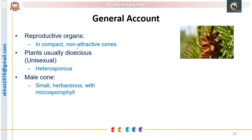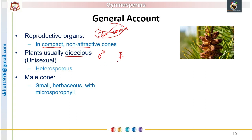The reproductive organs are produced in compact cones. These cones are non-attractive as calyx and corolla are absent. The plants are dioecious — male plants are separate from female plants, so each plant is unisexual. They produce two types of spores: the male plant produces microspores and the female plant produces megaspores. Because the spores are of two types, gymnosperms are called heterosporous.